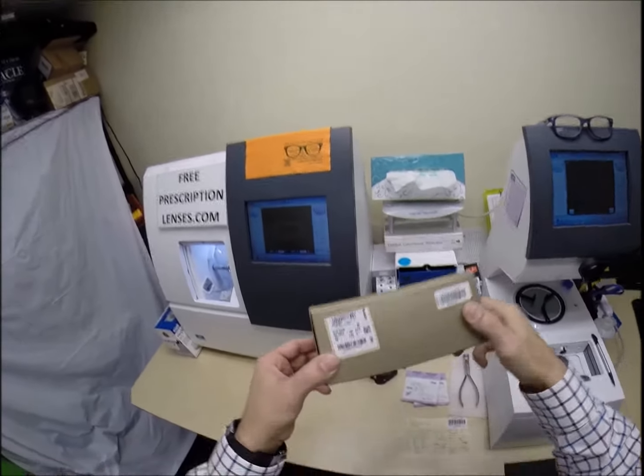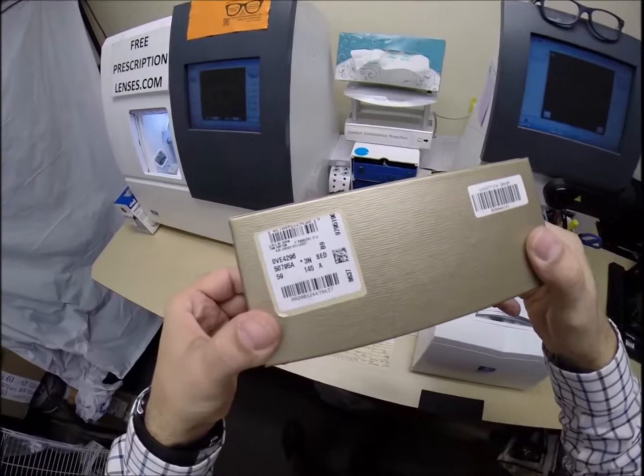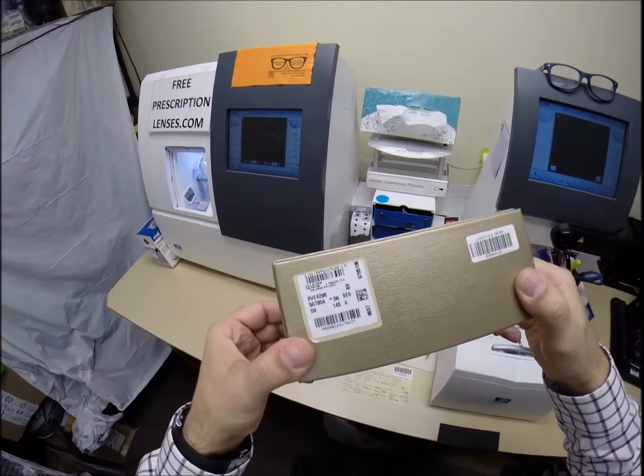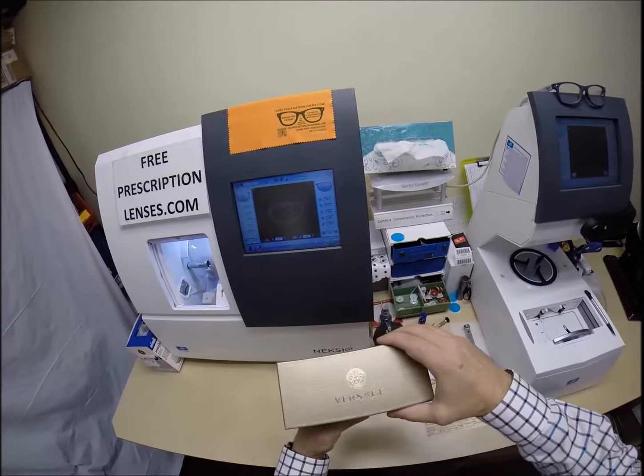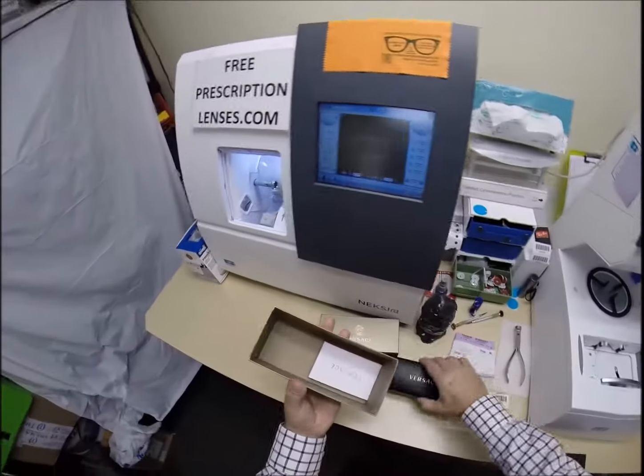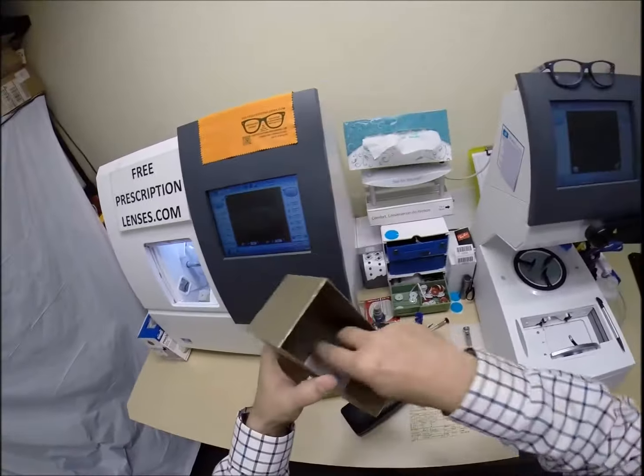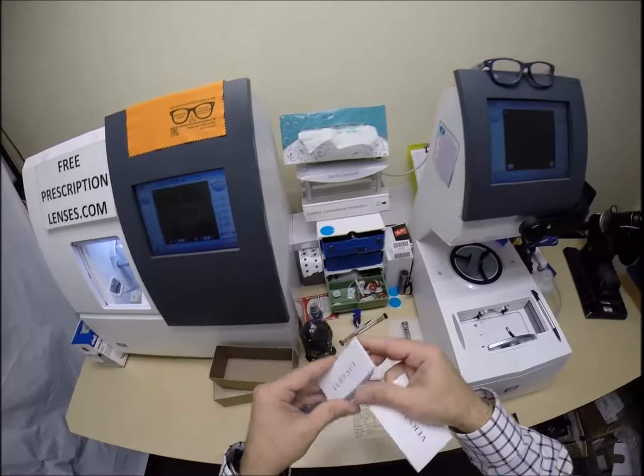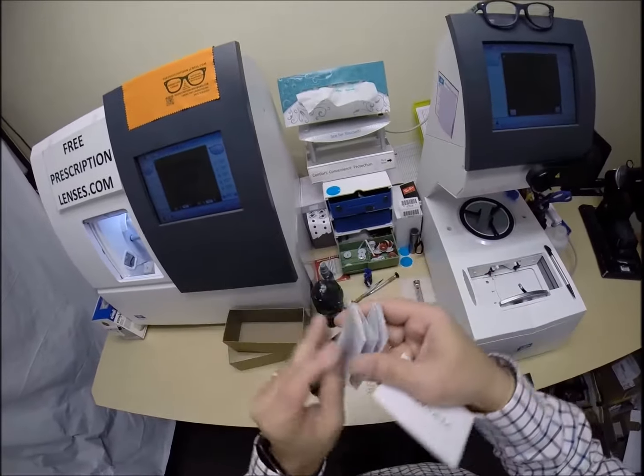This is the Versace 4296 in color 5079 which is the matte black in the 59 eye size. Let me take everything out of the original packaging. Of course you got your Versace junk mail in a million different languages.